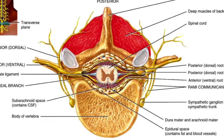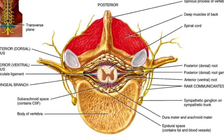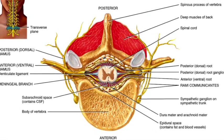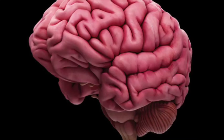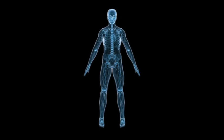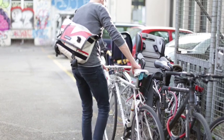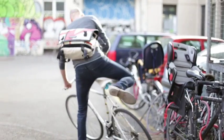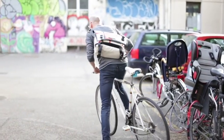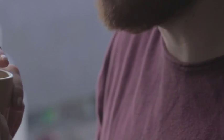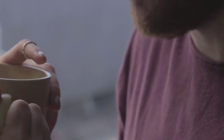SCI stands for spinal cord injury. But what is the spinal cord? The spinal cord is a cylindrical bundle of nerve tracks with surrounding tissue that connects the brain to the body. It is important because it is the very link which allows us to move, feel and respond to stimuli.